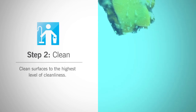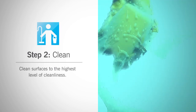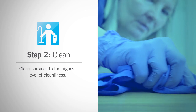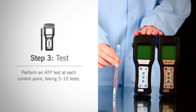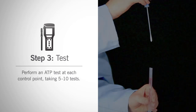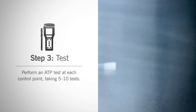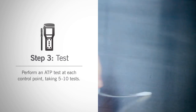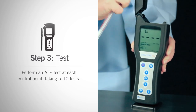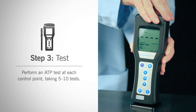Step 2: Clean surfaces to the highest standard of cleanliness. Be sure that future cleanings will be held to this level of clean as a standard. Step 3: Perform an ATP test at each control point, taking 10 replicate tests. You can either perform tests over several days, or for control points with large surface area, perform multiple tests from different spots at that location.